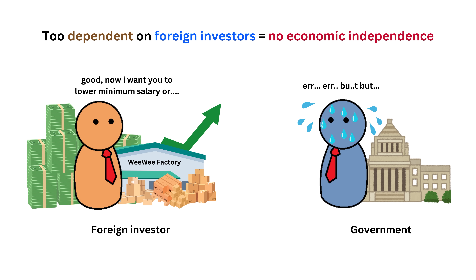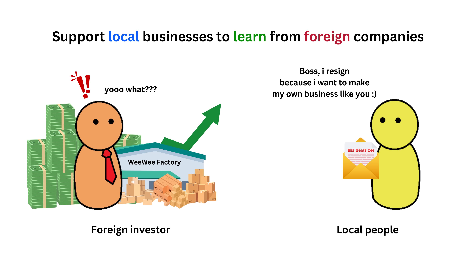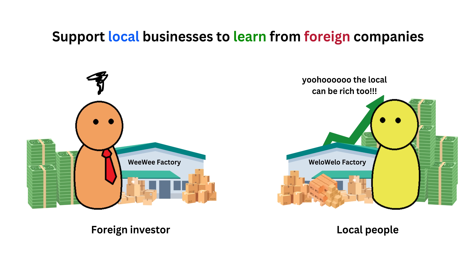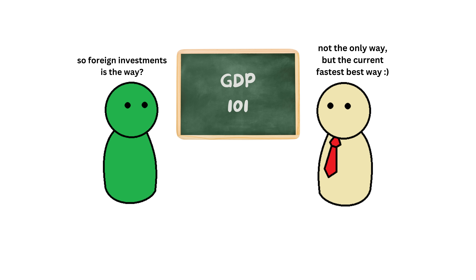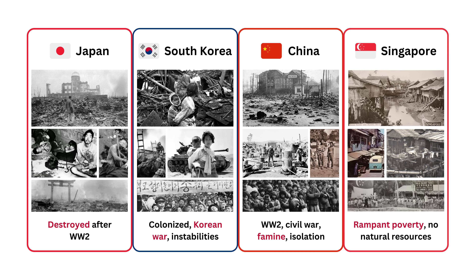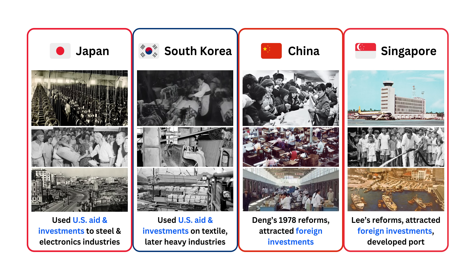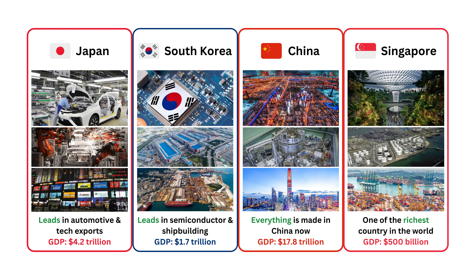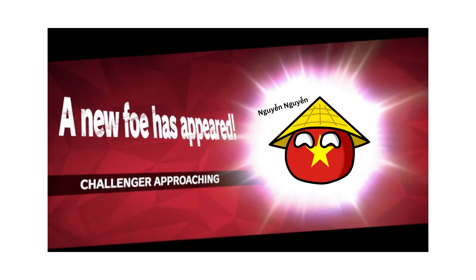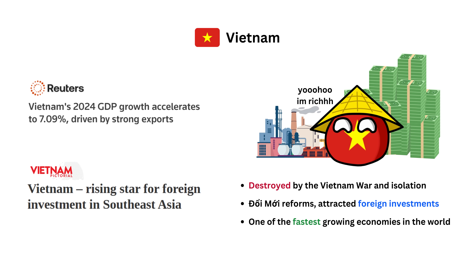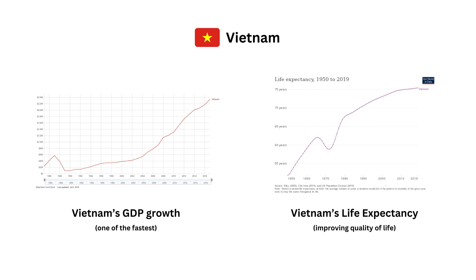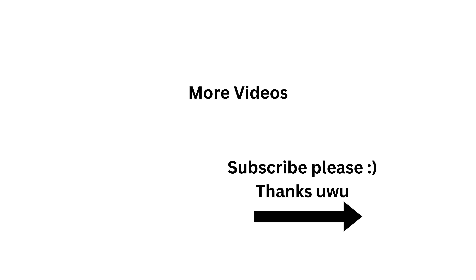Being too dependent on foreign investors is not ideal in the long run, as it can limit a country's economic independence. The solution is to support local businesses in learning from foreign companies so that locals can eventually replace them. This is the fastest way for a country to escape poverty and make its GDP skyrocket. Real examples include Japan, South Korea, China, and Singapore — they used to be very poor but attracted foreign investment, learned from it, and became economic powers. Vietnam is a newer example currently using this strategy to increase not only its GDP but also its quality of life.